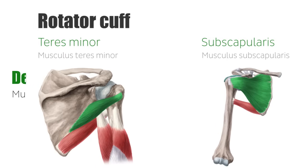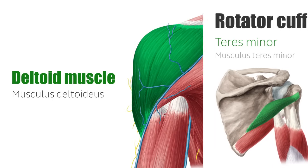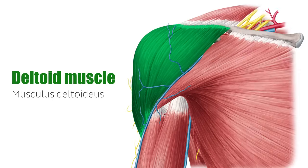Around the rotator cuff are many muscles that contribute to shoulder movement. The deltoids, superior to the shoulder joint, form the shape of the superior aspect of the shoulder and work with the supraspinatus to abduct the arm.